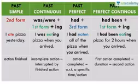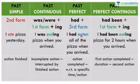Then we have the past perfect tense. In this tense, we use the third form of the verb. For example: 'I had eaten all of the pizza when you arrived.' We have two actions happening — the first one was completed when the second action happened. I had already finished the pizza, so my first action had already been completed. That's the past perfect tense.